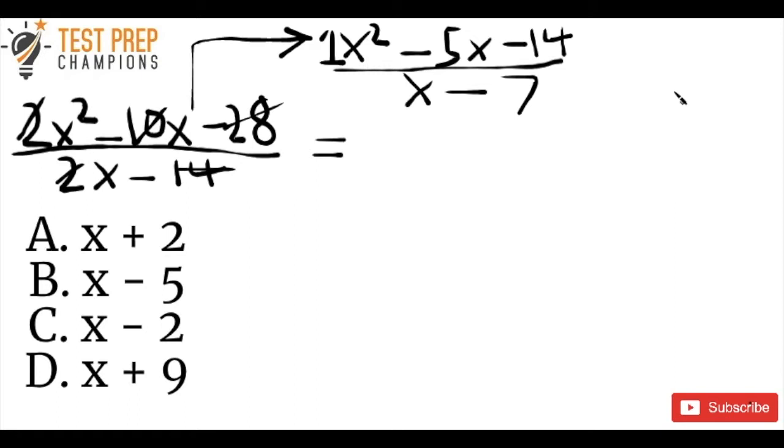So what we then do is we want to find two numbers that will multiply together to give us negative 14, but that will add up together to give us negative 5. So let's just list some factors of negative 14 off the top of our head. So obviously we've got 1 and negative 14. And by factors I just mean numbers that you can multiply together to give you negative 14, but that will also add up to be negative 5.